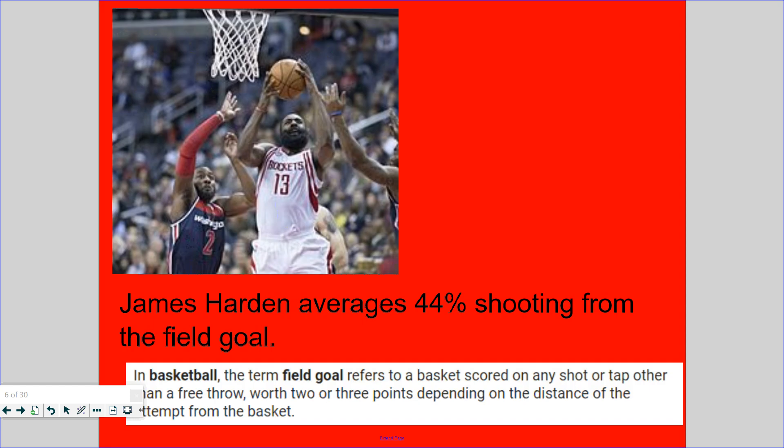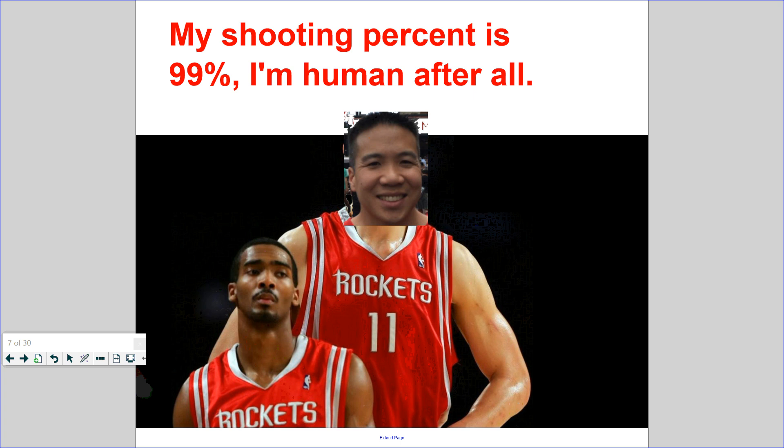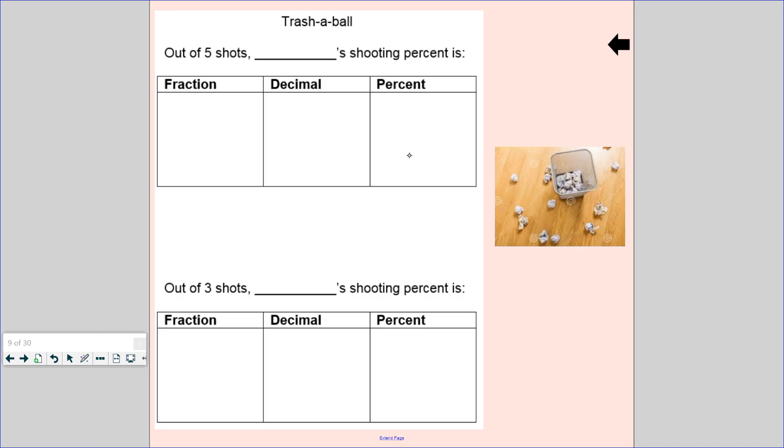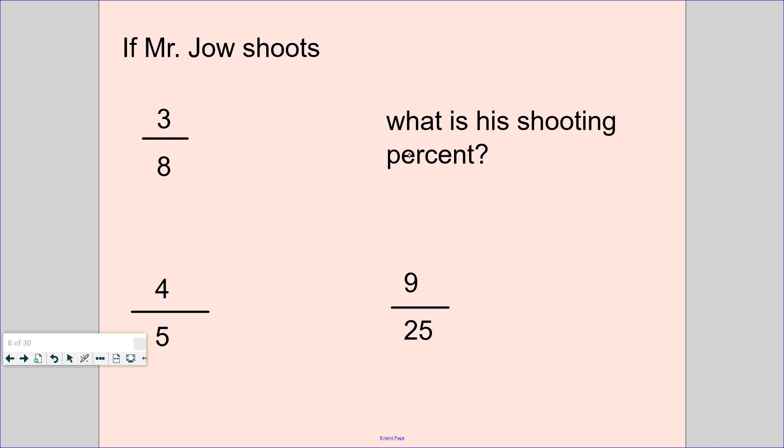James Harden averages 44% shooting from the field goal in basketball. The term field goal refers to a basket scored on any shot or tap other than a free throw, for two or three points depending on the distance of the attempt from the basket. So what if I shot these four different field goal shots? You are also going to be doing this during class, but you know what, this is about me. So before I do 3/8, I'm going to look at 3/4.